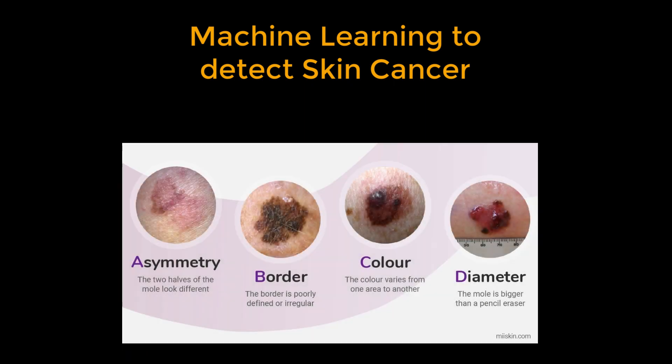To give an example you may have heard of recently, doctors are starting to use computers to identify melanomas, a type of skin cancer. The main symptoms are ABCD: asymmetry, border, color, and diameter. For dermatologists, these are features that they are trained to identify as either cancerous or not, having seen hundreds or thousands of examples.